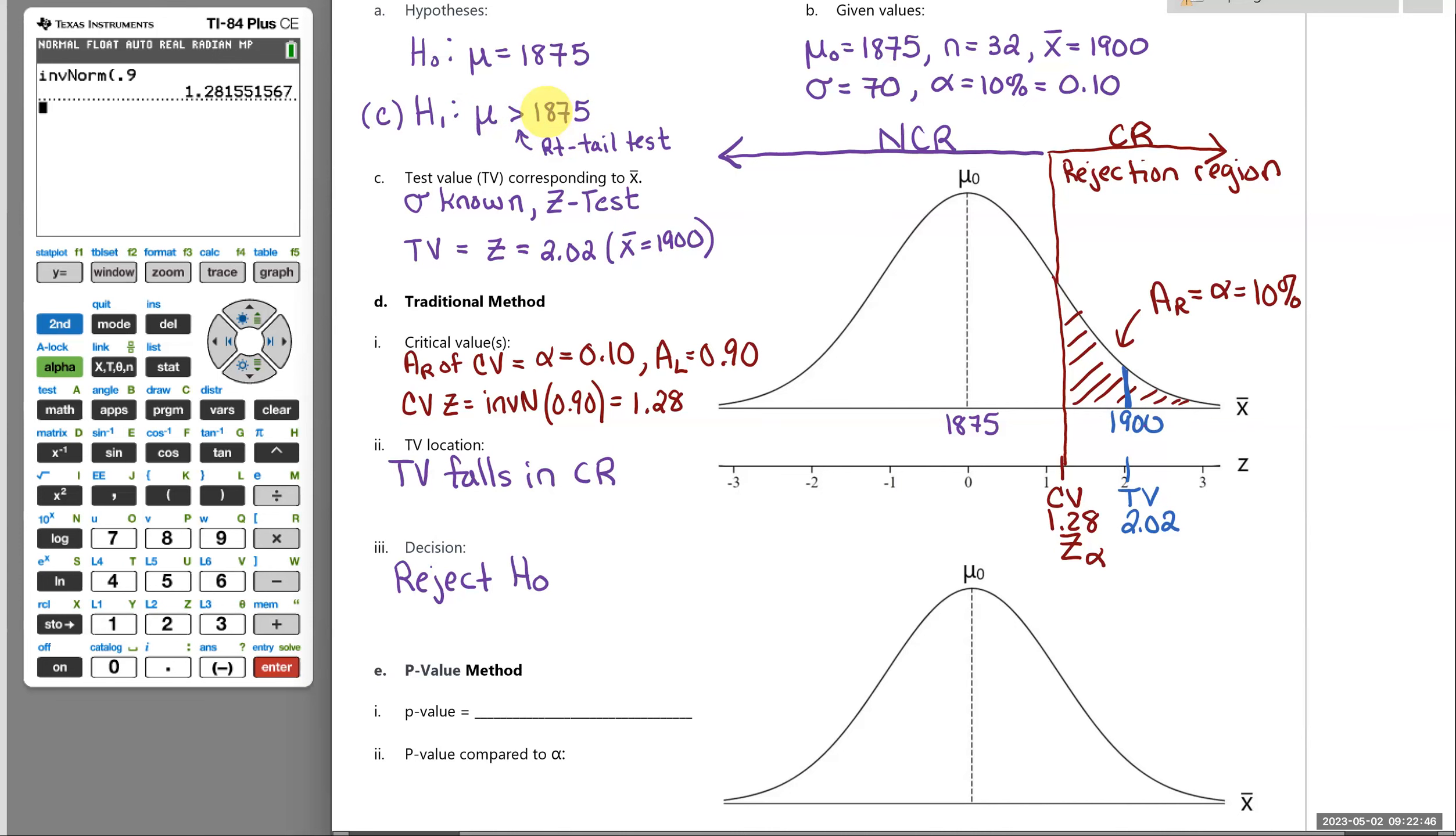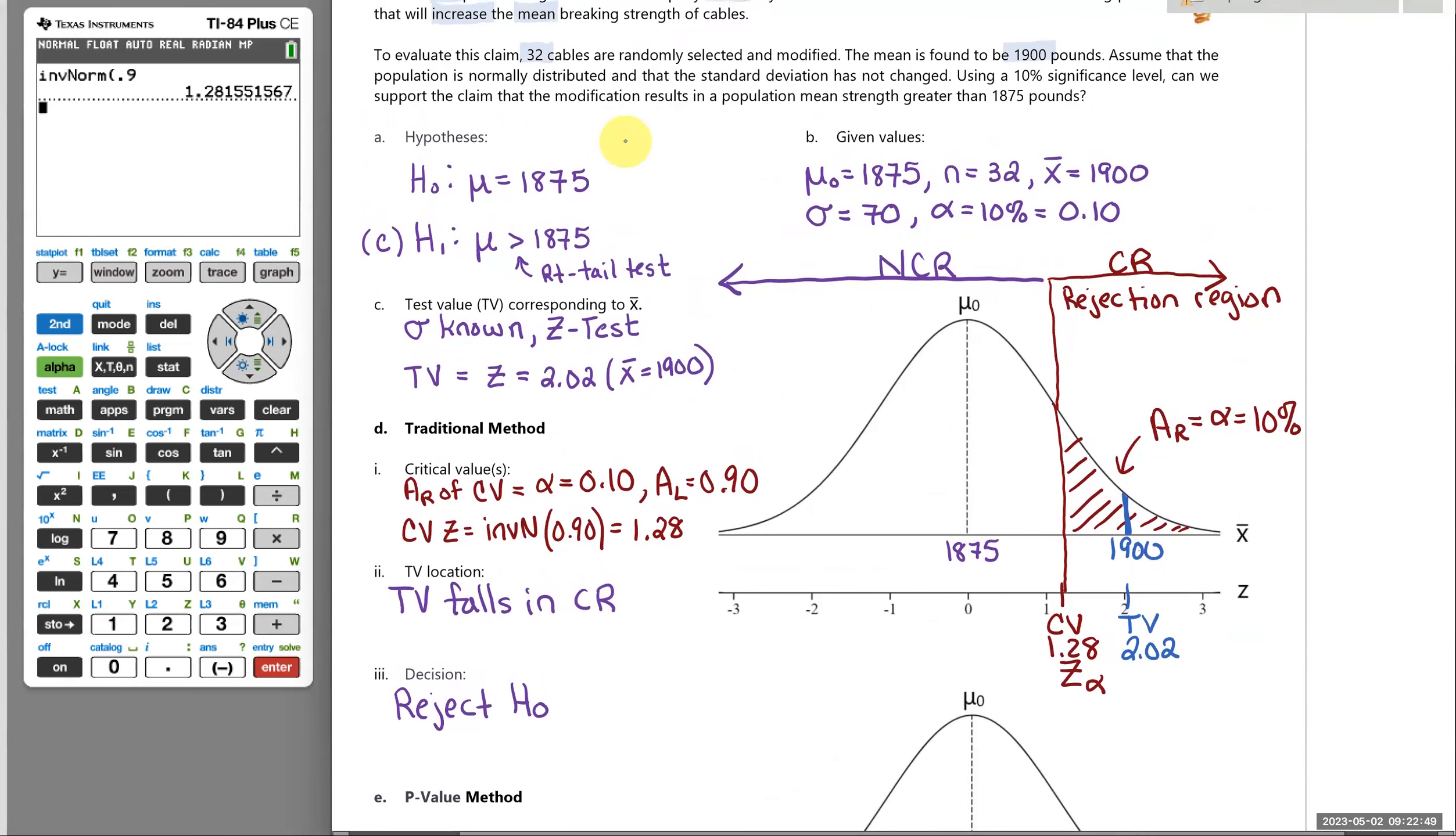All right. And any time you reject the null hypothesis, so any time you reject H naught, it means you are supporting your claim that we wrote as our alternative hypothesis. Okay. That's traditional method of hypothesis testing.